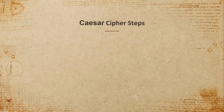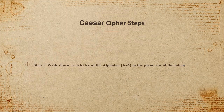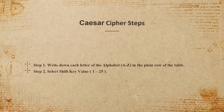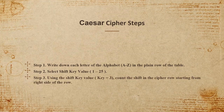Now let's talk about the steps for encryption and decryption using the Caesar cipher. Step one: write down the alphabet from A to Z in a table — we call this first row the plain row, representing the plain text or original message. Step two: select a shift key value from 1 to 25, which represents the key we'll use to shift the second row, called the cipher row.